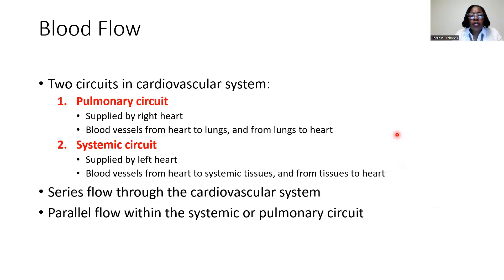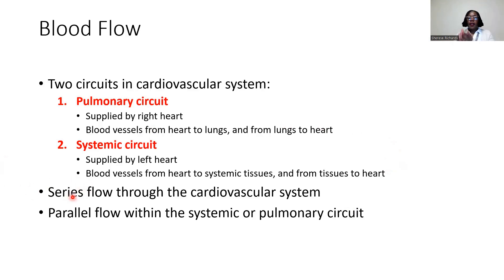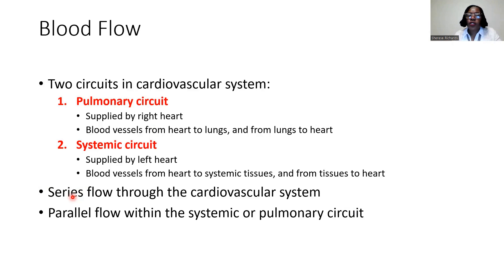We want to think about two different types of flow happening here. There is series flow through the cardiovascular system, meaning that blood is going in a series: from the left atrium to the systemic circulation, to the right atrium, to the right ventricle, back to the lungs, and then back to the left atrium. The word series here means it's happening one after the other — heart, systemic, heart, pulmonary. That is the series way of flowing through the entire cardiovascular system.